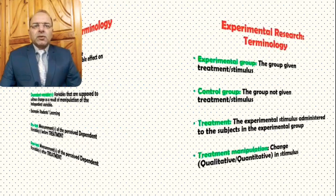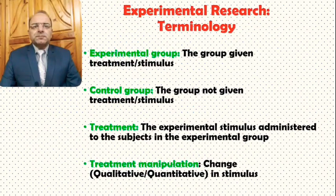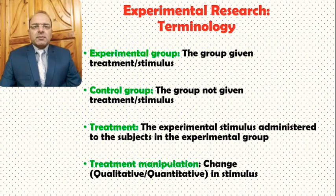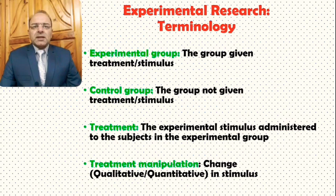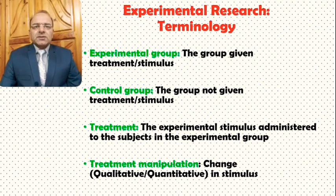Next is the experimental group. What is an experimental group in the context of an experimental research design? It is the group given treatment or stimulus. In experimental researches, we generally have two types of groups. The experimental group is the group that receives treatment or special treatment — the group that actually goes through the particular experimental process, where the stimulus is applied.